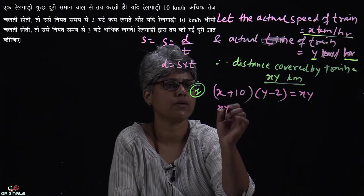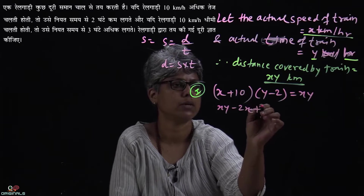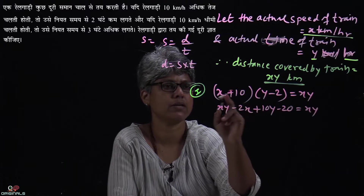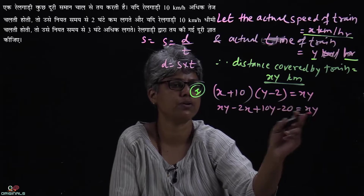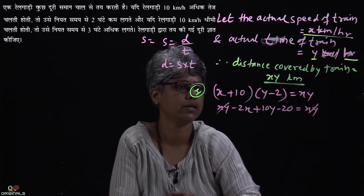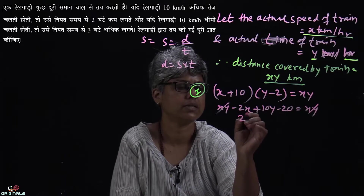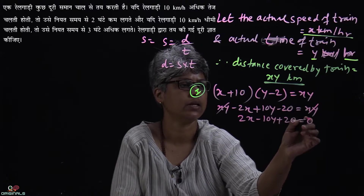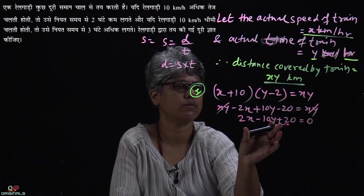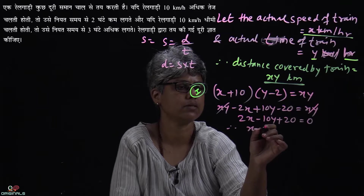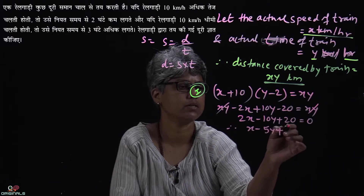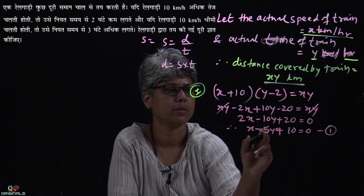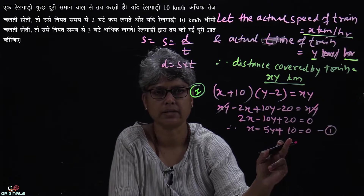Expanding: x plus 10 into y minus 2 equals xy, giving xy minus 2x plus 10y minus 20 equal to xy. The xy terms cancel. Multiplying through: 2x minus 10y plus 20 equal to 0. Dividing by 2, we get Equation 1: x minus 5y plus 10 equal to 0.